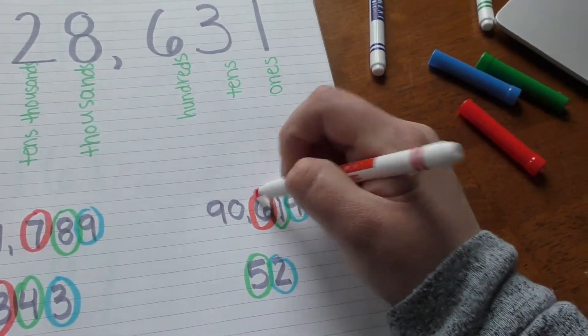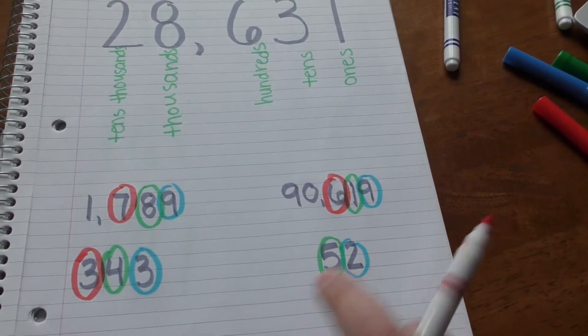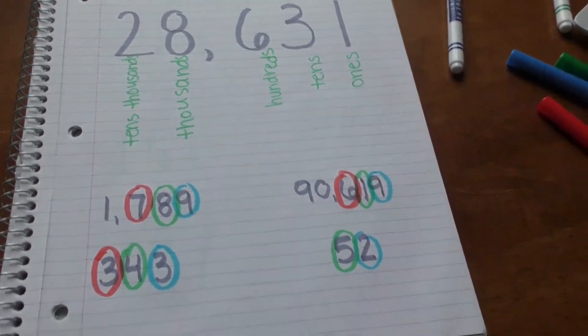1, 2, 3, 6 is my hundreds place, and this one doesn't have a hundreds place because it's only 52. It only consists of tens and ones.